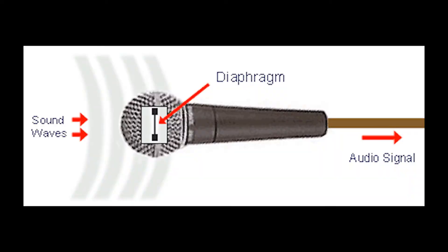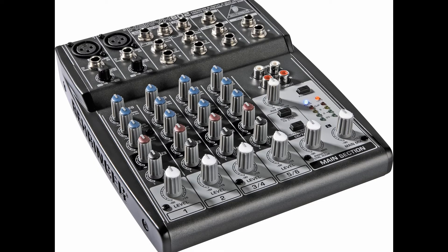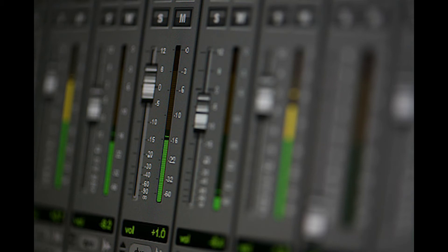Remember, a microphone is an input transducer. The vibrations in the air are picked up by the microphone and converted into voltage variations, or an audio signal. This signal is then sent to a preamp, which can be found on a mixer or audio interface. The preamp amplifies the audio signal to standard line level so that we can actually make use of that audio signal.